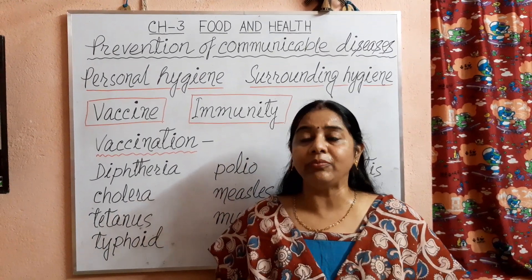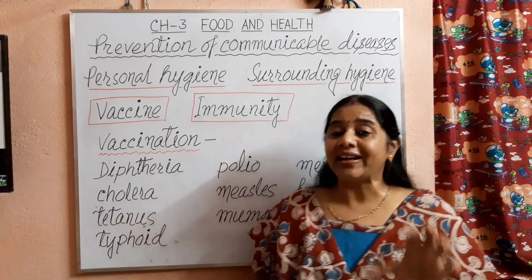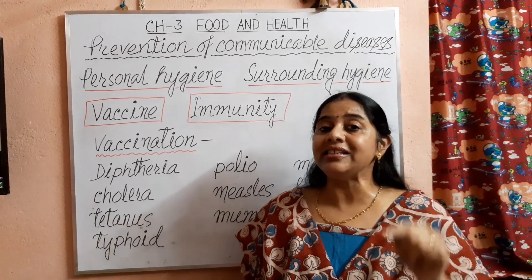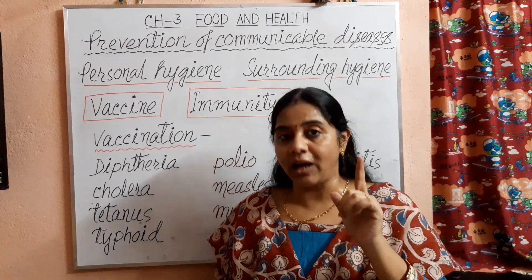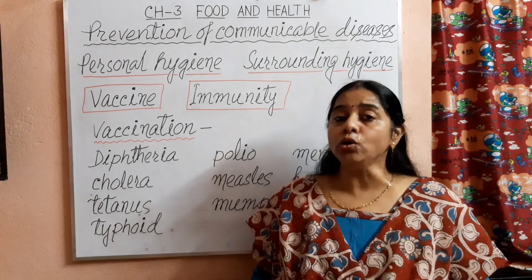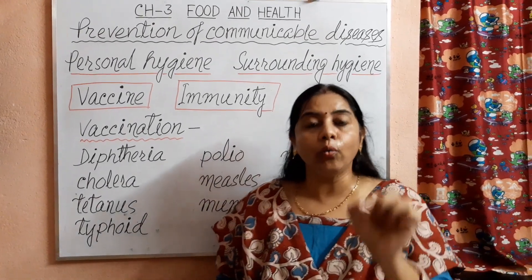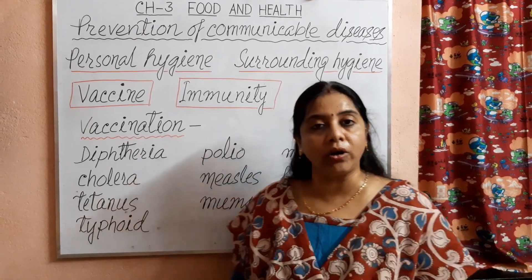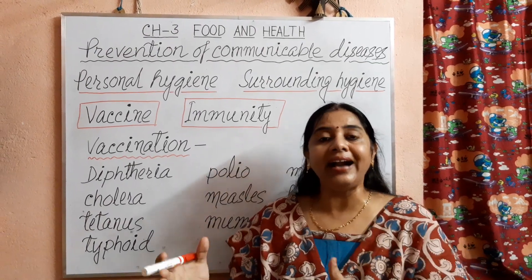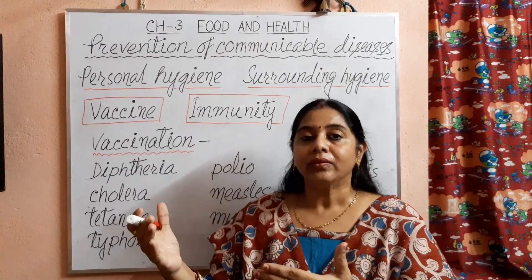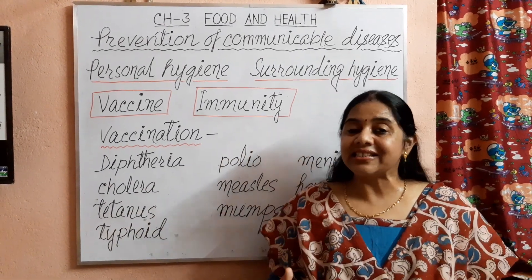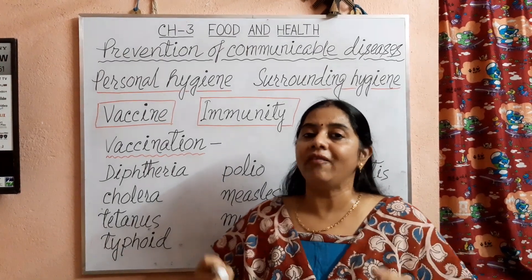You may ask: what is a vaccine? Vaccines are some dead or weak germs of a specific disease which are injected into the body. Due to the injection of dead and weak germs of a specific disease into our body, our body becomes ready to fight with that disease when we are attacked by it in the future. Vaccine also helps in boosting our immunity power.